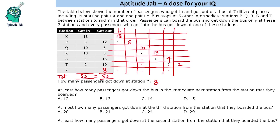We need to minimize the number who got down at the immediate next station. Some values are non-negotiable: 12 people got down at P and there is no station before X, so these 12 must be from those who boarded at X. Also, 2 people got in at the second station and will get down at the next station. So the minimum is at least 14, but we need to verify whether the answer is 14 or 15.